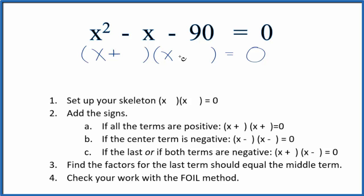So let's add our positive and negative. Now we're going to find the factors that add up to the last term, this minus 90 here, and those factors should equal when we add them together the middle term, this minus 1x.